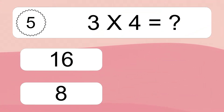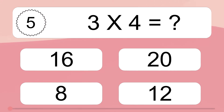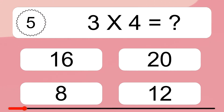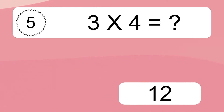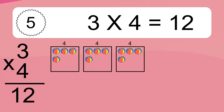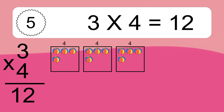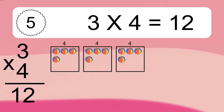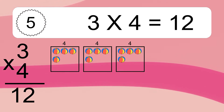3 times 4 equals what? 3 times 4 equals 12. We have 3 boxes, and each box has 4 colorful balls inside. If you count all the balls in all the boxes together, you will have 3 times 4 balls. This equals 12 balls.